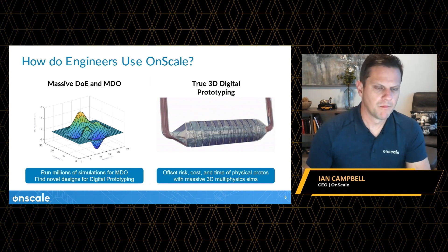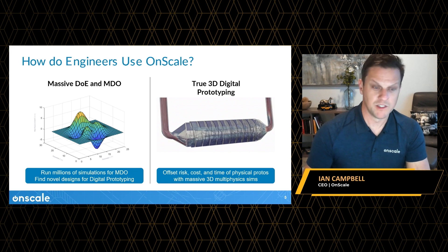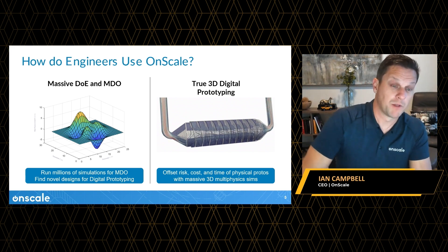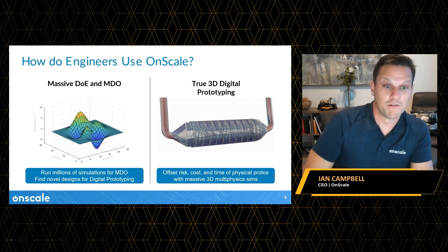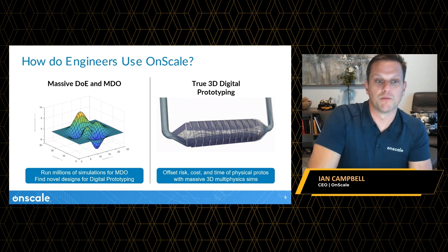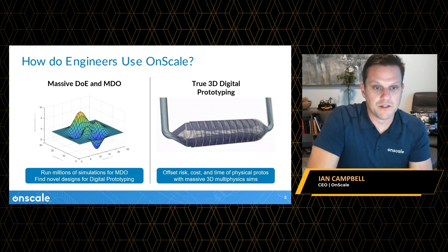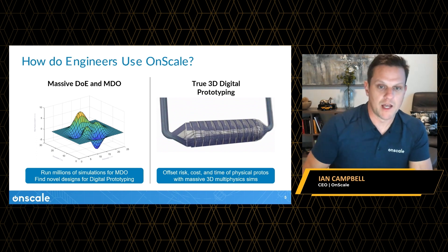How do engineers use OnScale? One of two ways. Engineers can use OnScale to run lots of small simulations for things like design space exploration and multi-disciplinary design optimization — what we call digital prototyping. And then when you've got a good design to focus in on, you can use multi-physics and cloud simulation to create true 3D digital prototypes — virtual prototypes that give you as much engineering information about how a device will work before you spend time, cost, and risk making a physical prototype to validate a design.